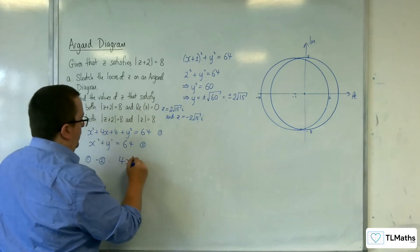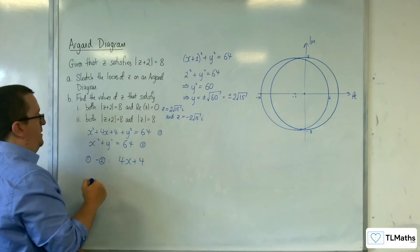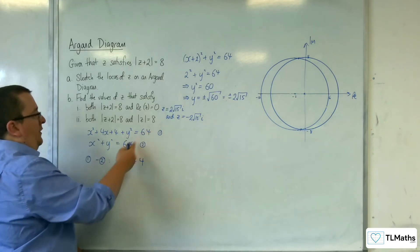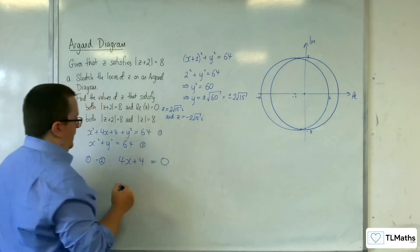We've got the 4x plus 4 on the left hand side. The y squared, take away y squared. Gone. 64, take away 64. Gone.